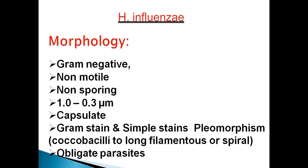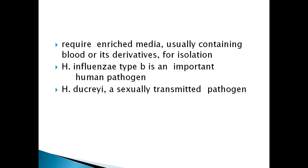The human body is the host for them — they grow in the human body. They require nutrient-rich media like blood agar or chocolate agar media for their colonization and isolation. Haemophilus influenzae type b is an important human pathogen. Haemophilus influenzae are grouped from a to f.